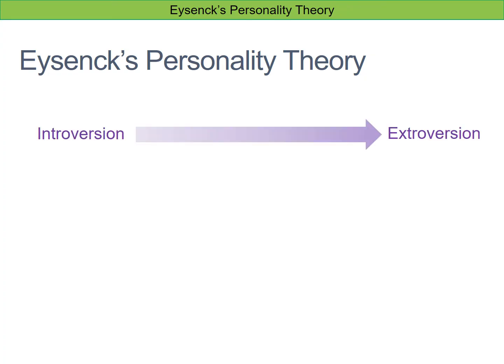The first of those dimensions was introversion at one end and extroversion at the other. An introvert is somebody who is quite inward looking — they'd have a small group of friends and wouldn't like big, loud, noisy social occasions. An extrovert is the opposite: somebody who has lots of different friends and is very stimulation seeking.